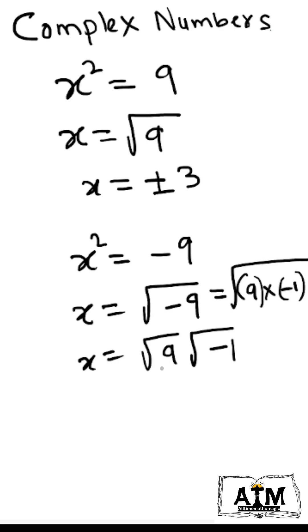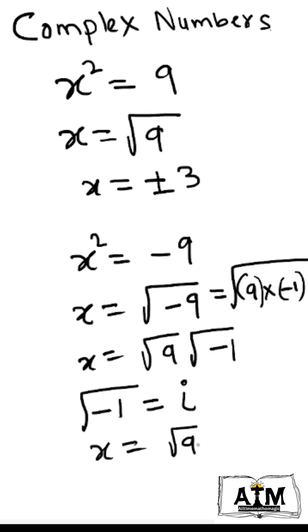So the square root of minus 9 can be written as root 9 times root of minus 1. This root of minus 1 is denoted by i, which is an imaginary number. Therefore, x equals root 9 times i, giving us plus or minus 3i.